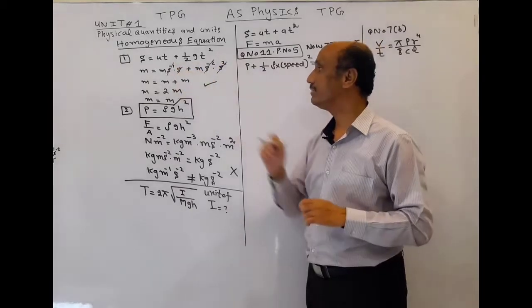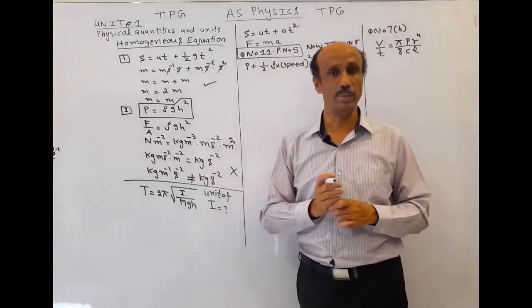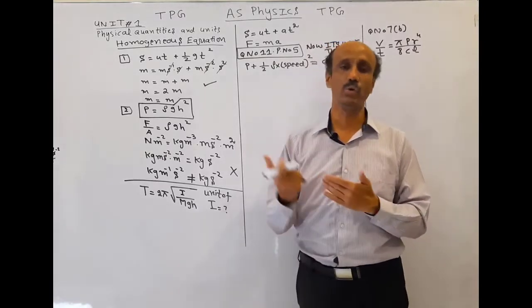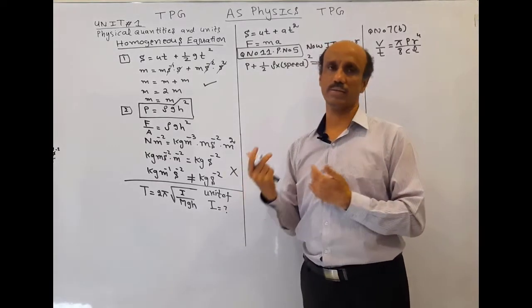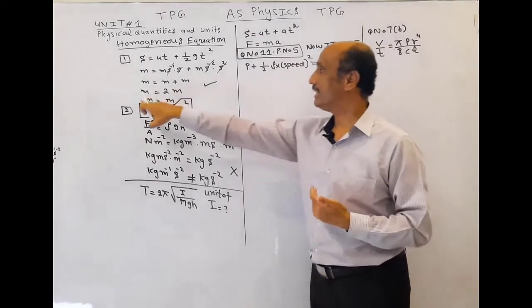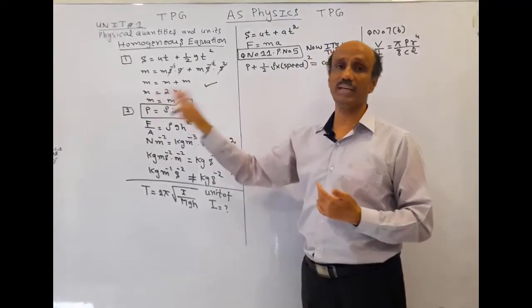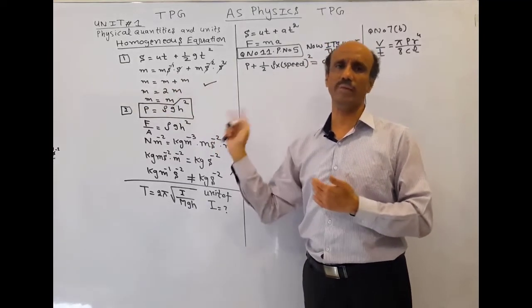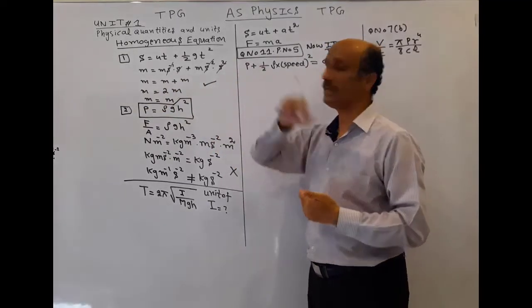The s² will cancel with s⁻², and the remaining s will cancel with s⁻¹, and we get m = m + m, which equals 2m. Ignoring the constant, you can observe that the unit on the left hand side and the unit on the right hand side are the same. So this is a homogeneous equation.